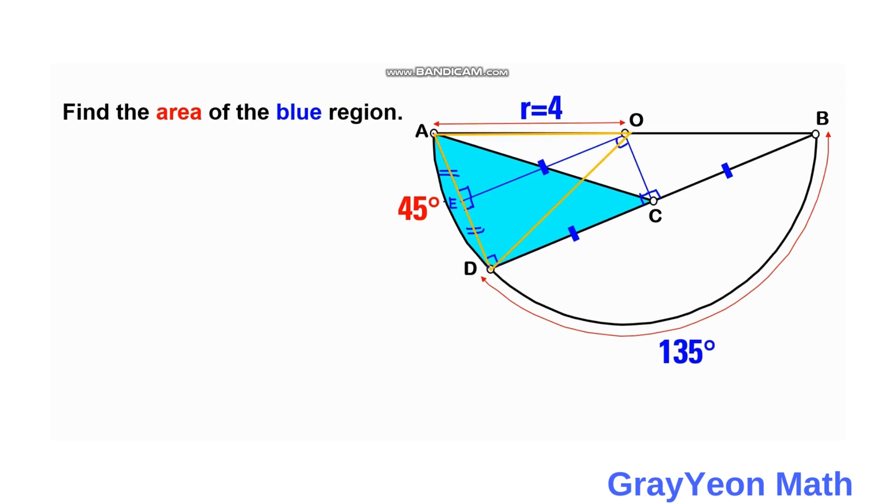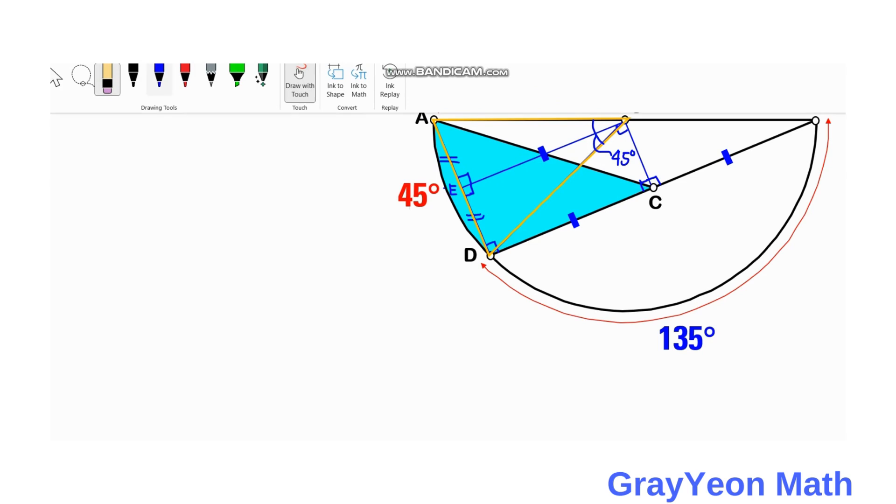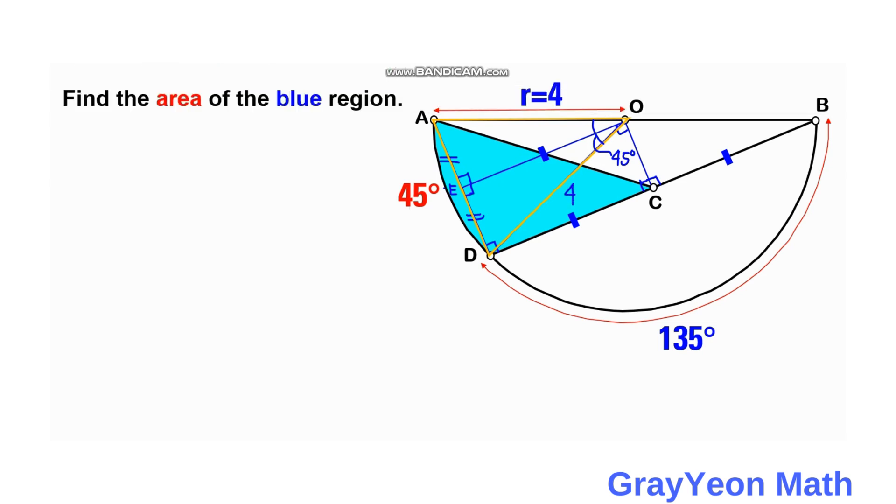Okay, so the area that we are actually looking for is the area of this sector, this area bounded by the two radii in this arc AD. And since we have already proved that the area of this orange triangle AOD and the blue triangle ADC are congruent, I mean the area is the same. And therefore, if we get the area of this sector, then we are going to get the shaded area of the blue region. Okay, so notice that this distance OD is also 4 because this is the radius of this semicircle.